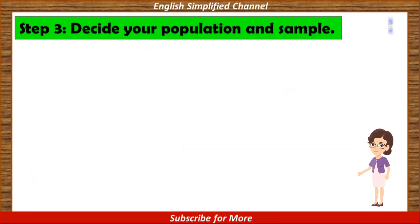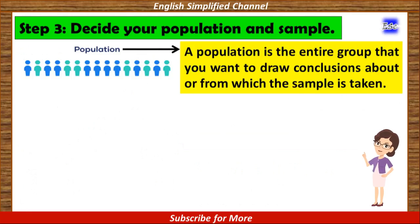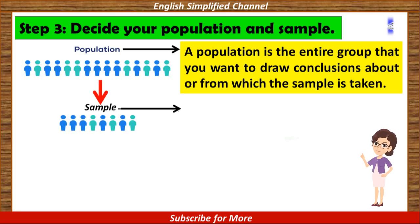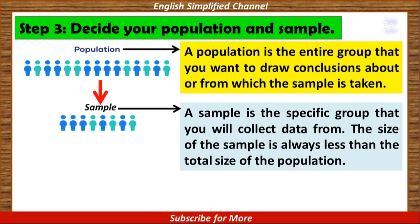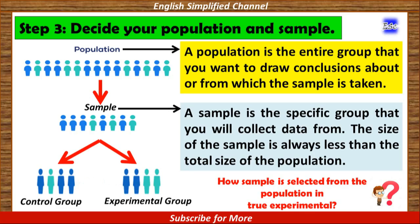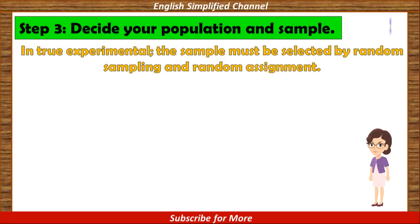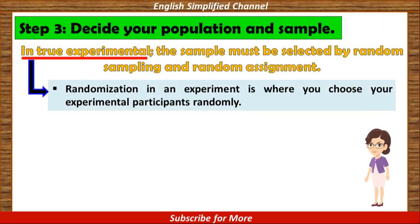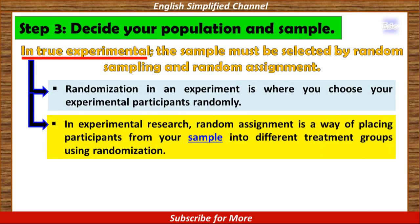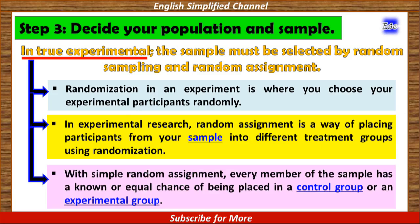Now let's proceed to Step 3: Decide population and sample. A population is the entire group that you want to draw conclusions about. A sample is the specific group that you will collect data from, and its size is always less than the total population. In true experimental, the sample must be selected by random sampling and random assignment. Randomization means choosing experimental participants randomly. Random assignment is a way of placing participants from your sample into different treatment groups using randomization, so every member has an equal chance of being placed in a control group or experimental group.